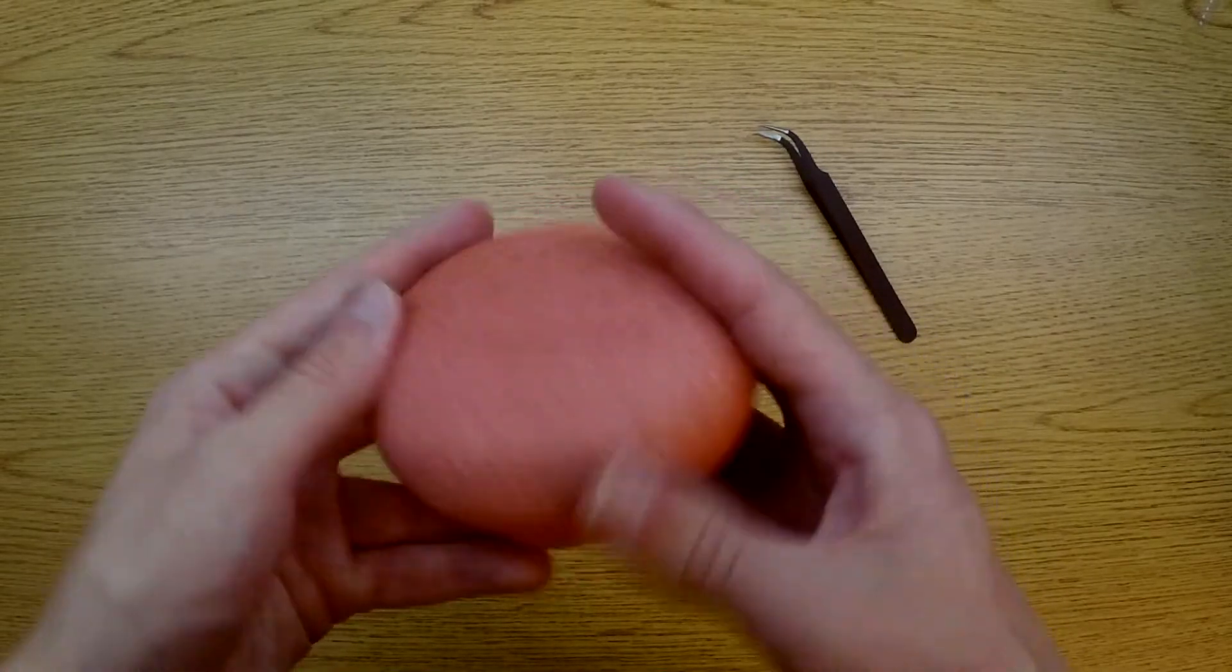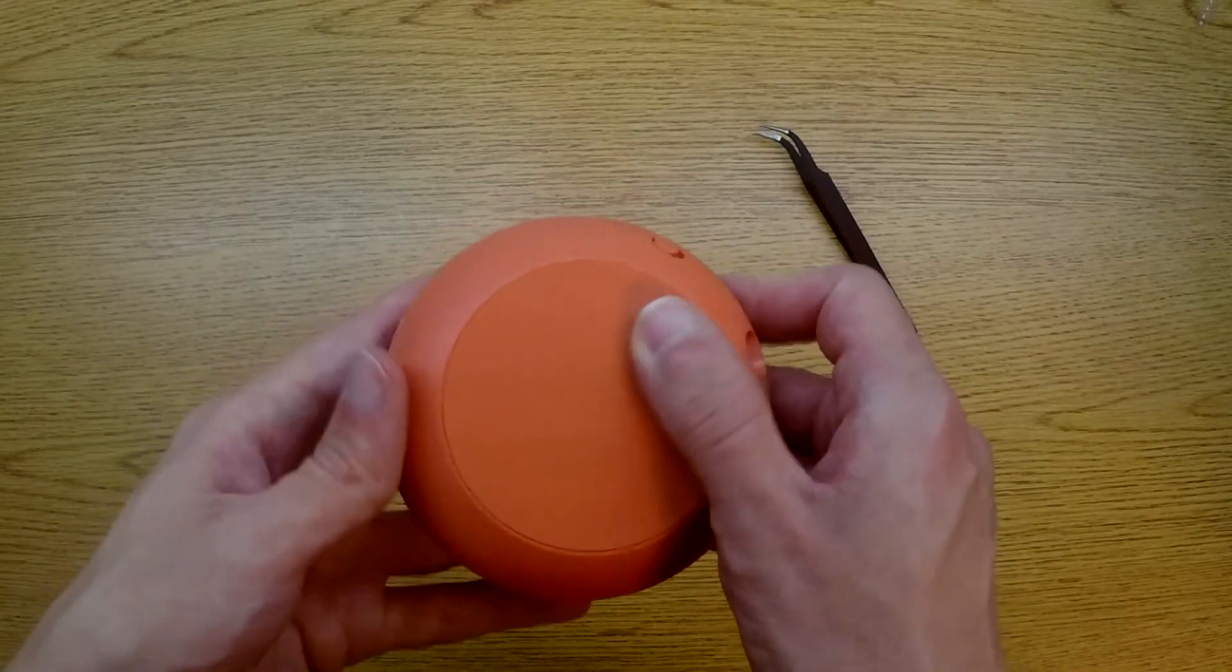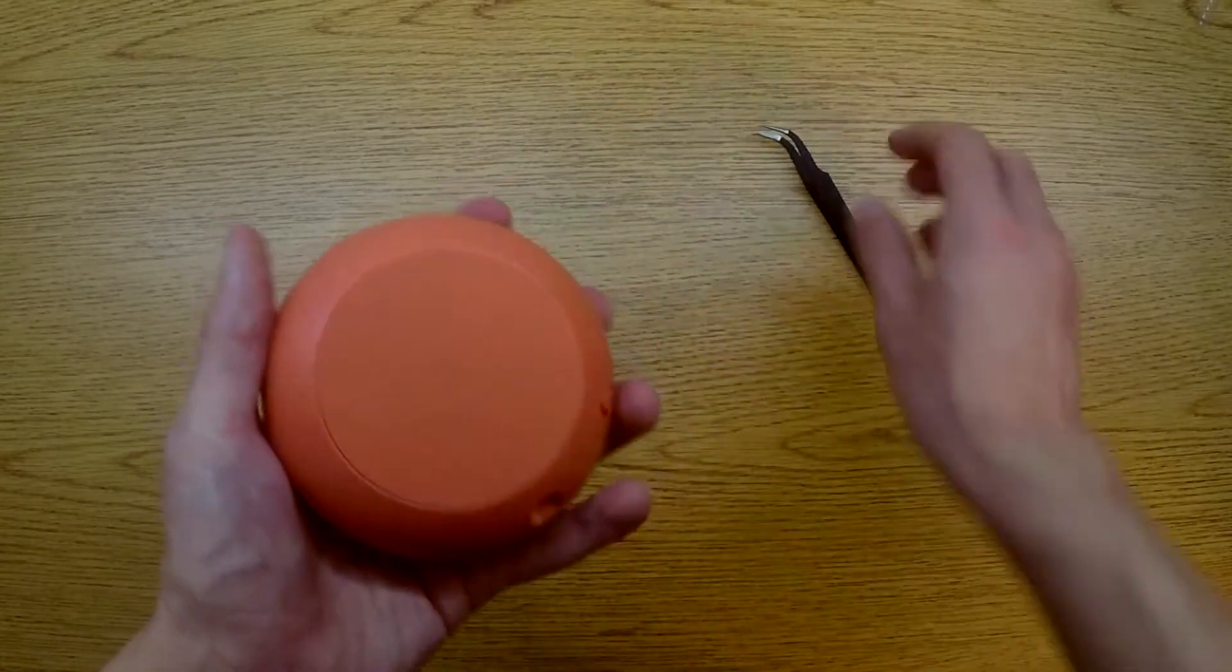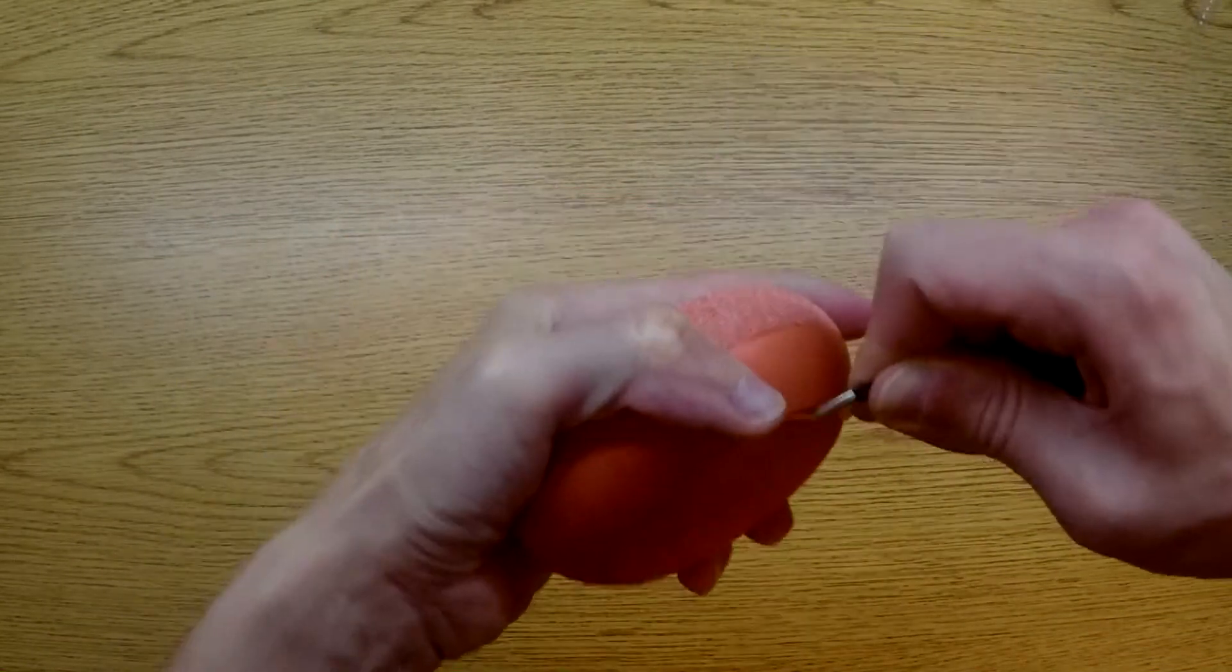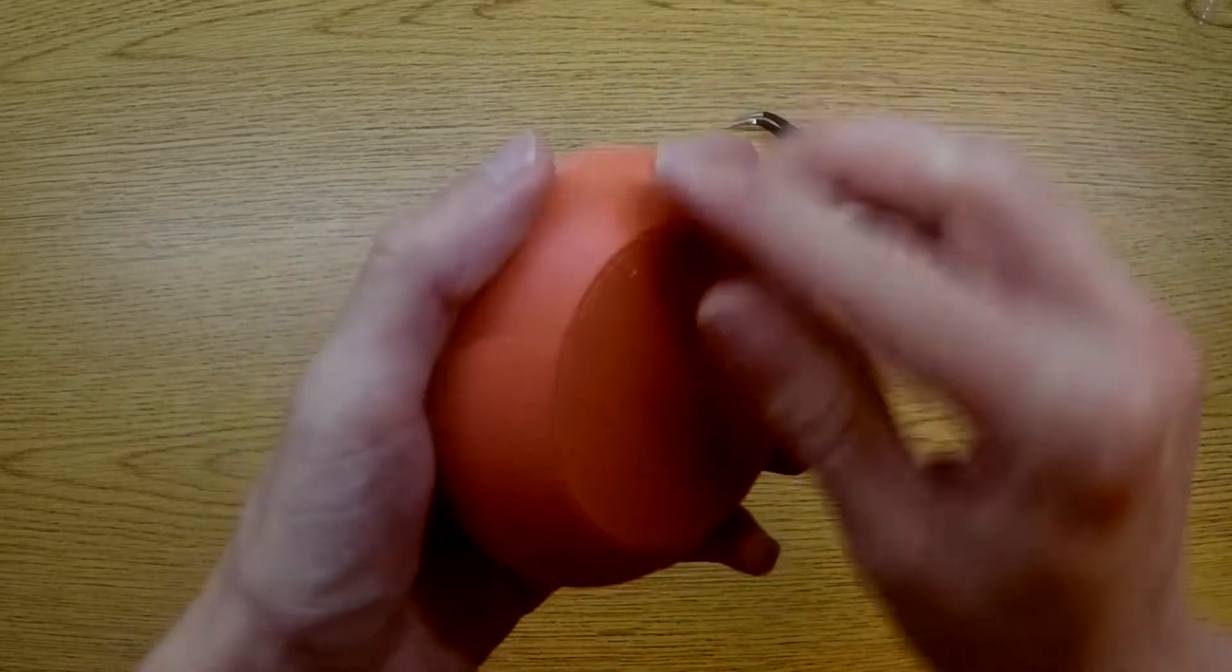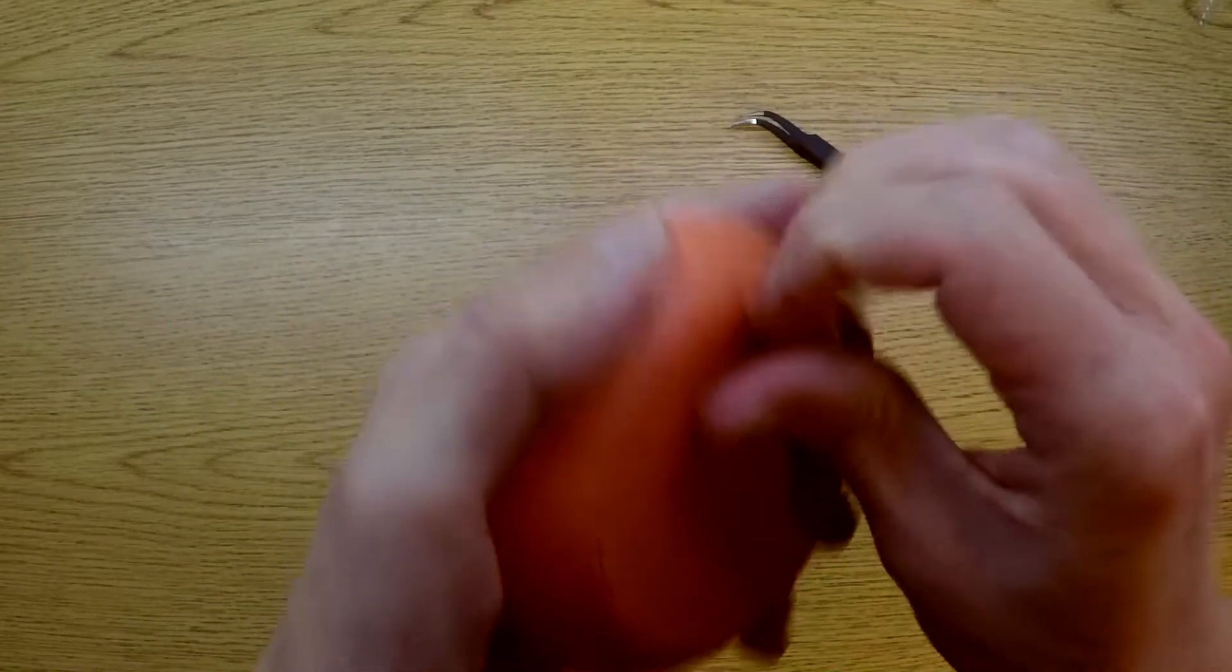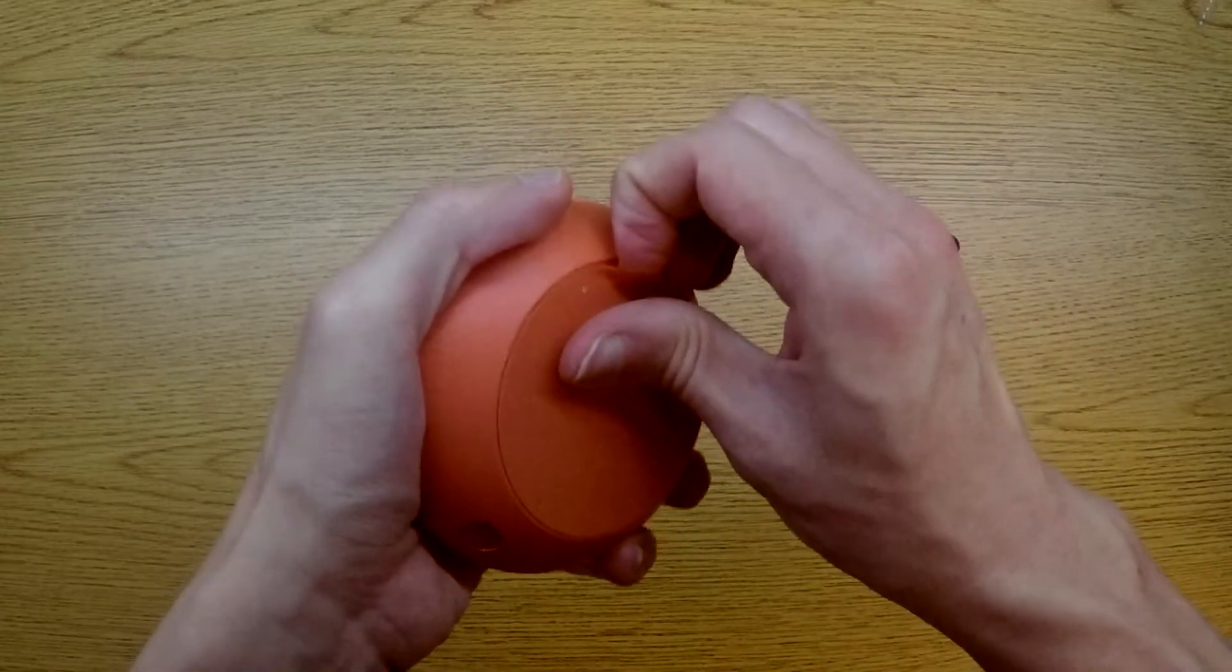The first thing we need to do is get this rubber piece off of the bottom of the device. It has adhesive to keep it on. I'm going to have to pry that off.